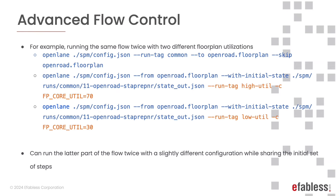Here are some example commands taking advantage of this. This runs the flow in two parts — a common part, then the second part twice: once with a higher floorplan utilization value and once with a lower one, without repeating all the steps before floorplanning. This saves the time of having to rerun those parts of the flow independently.